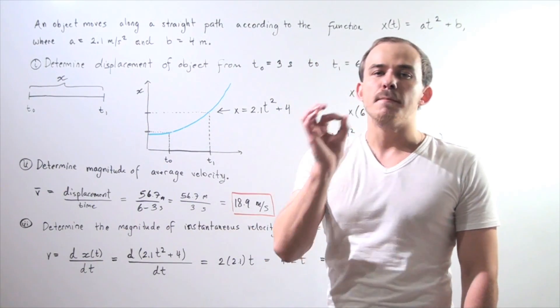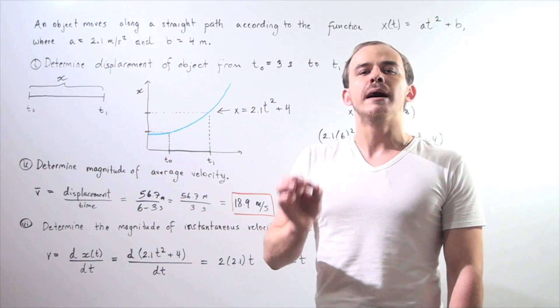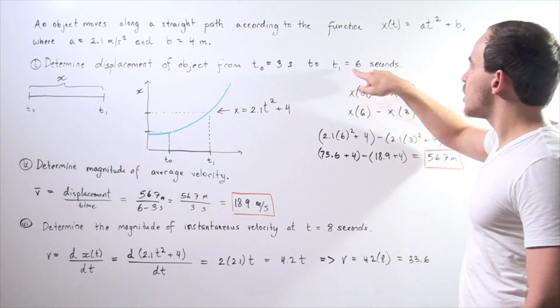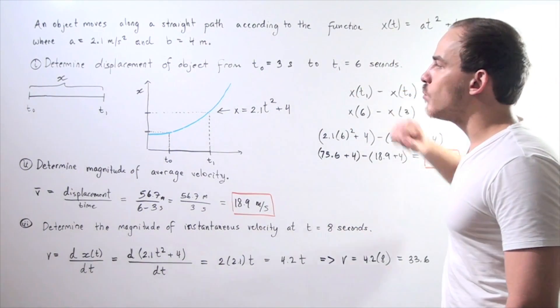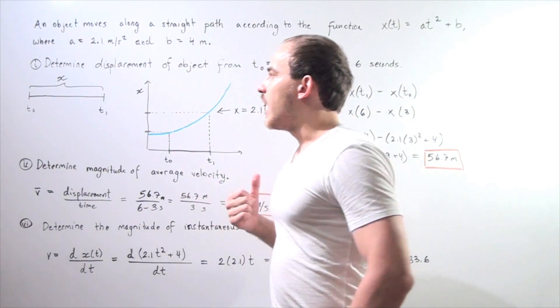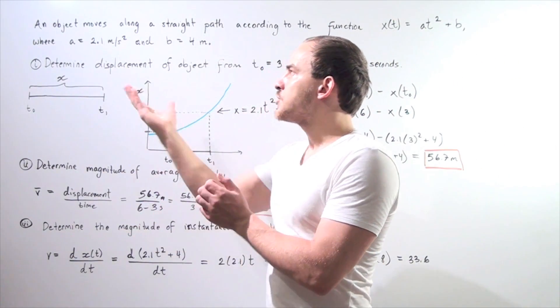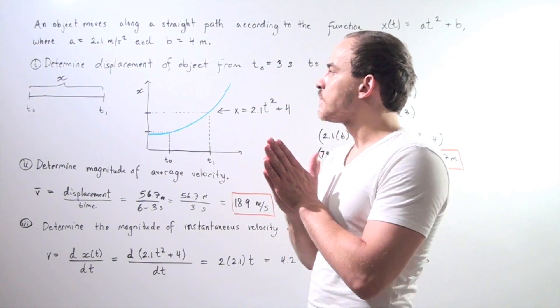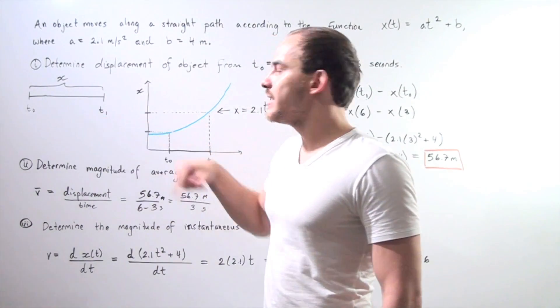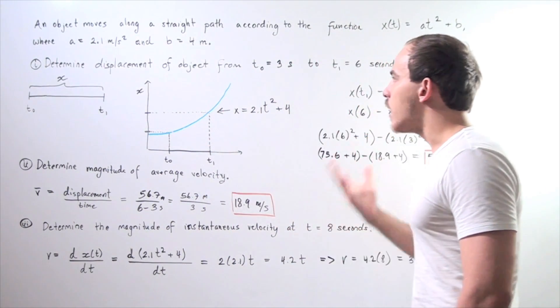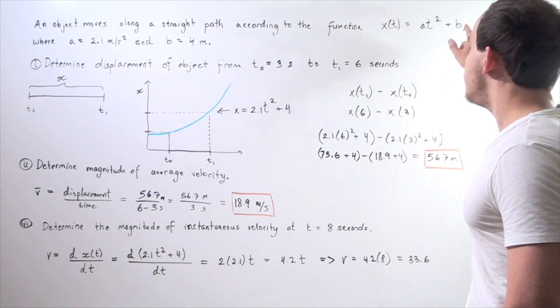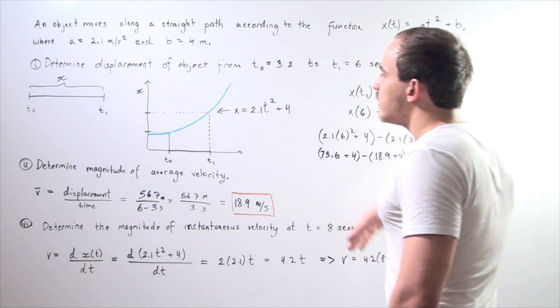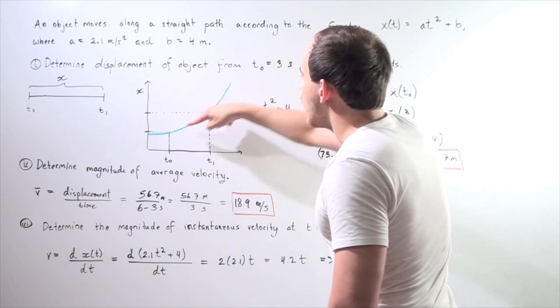Determine the displacement of the object when it moves from time equals 3 seconds to time equals 6 seconds. Let's replace our a and b values by their corresponding numerical values and plot our equation, which has a parabolic form.